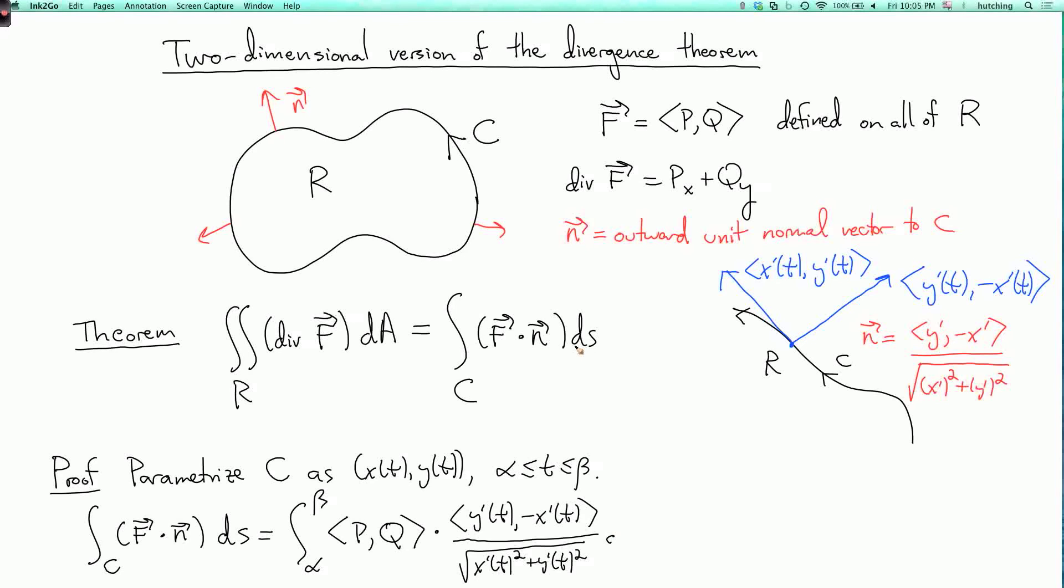Oop! But it's not dt. It's dS. So dS is the square root of x prime squared plus y prime squared dt. So this is the square root of x prime of t squared plus y prime of t squared dt. Okay? So this whole thing here is dS. But now, I can cancel out these two ugly square roots.